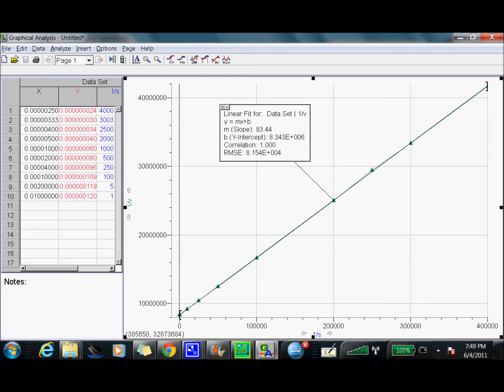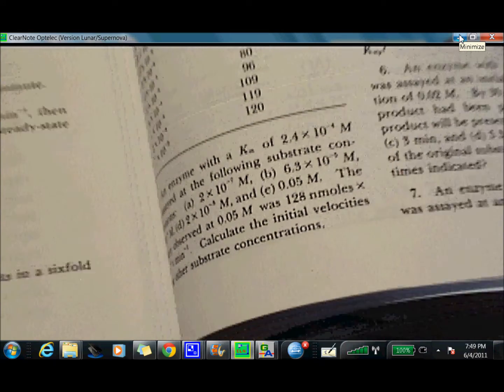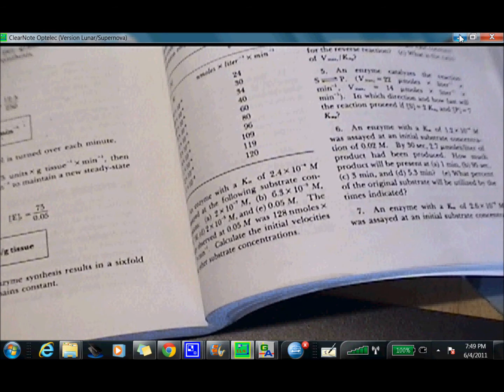Because all you're really doing is you're plotting the one over S versus one over V. And then you're plotting two different lines. You're plotting the normal line versus what happens when it's inhibited. We'll get to that in a second. But generally, if you guys want to skip ahead, that's what we're going to be doing. So right now, I'm going to go be going back to here and I'm going to be writing stuff.